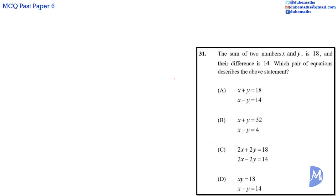Question 31: The sum of two numbers X and Y is 18, so X added to Y is equal to 18. And their difference is 14. That says that X minus Y is equal to 14. The answer is A.